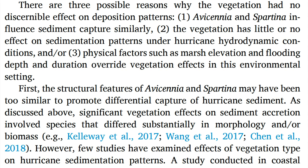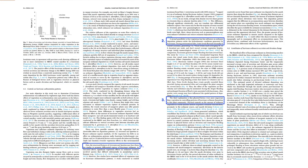That comprehensive review prepares the reader for the next part of the discussion, which is the interpretation of our results. We list three possible reasons why there was no effect of vegetation on sedimentation in the ecosystem we studied. These three explanations then become the topic sentences for the next three paragraphs. In each of those paragraphs, we give those explanations. So the fourth way to expand your discussion is through an explanation of your logic.